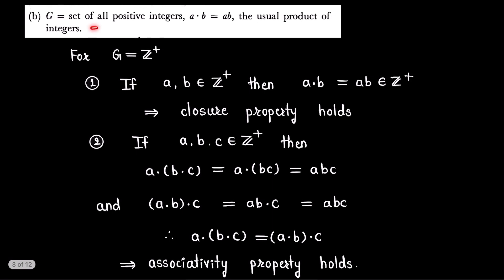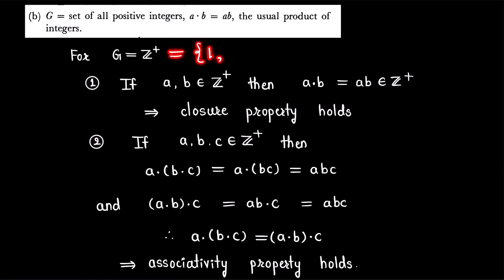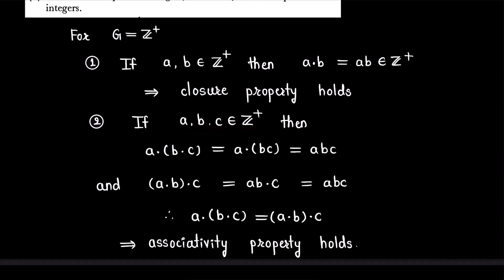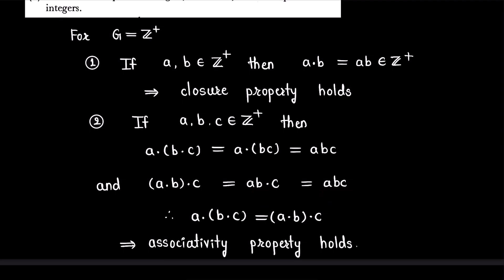The next set is the set of all positive integers and the binary operation is the usual product of integers. So here G is Z-plus, the set {1, 2, 3, 4, ...}. For any two positive integers, a dot b equals ab and we know that the product of any two integers is again an integer, so closure property holds. Also for any three integers, (a dot b) dot c equals (ab)c equals abc, and a dot (b dot c) equals a(bc) equals abc, therefore associativity holds.